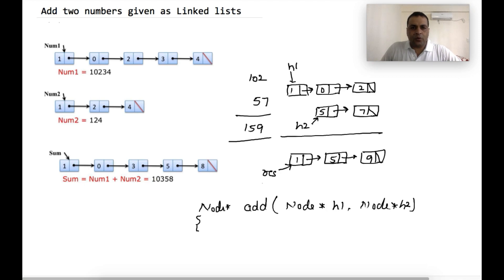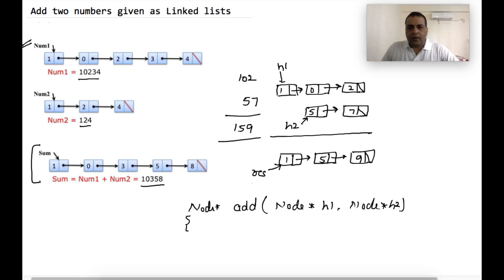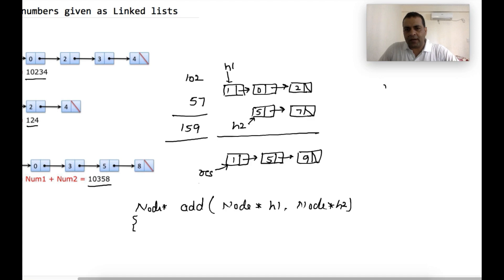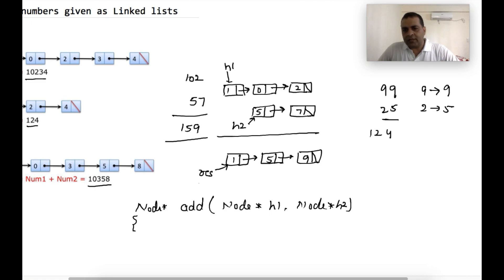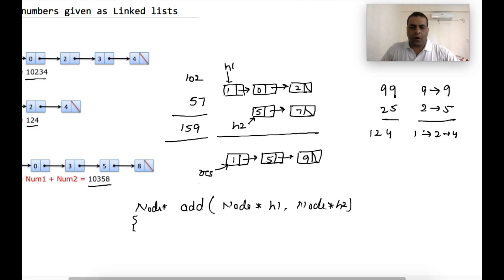If the first number is 10234 and the second number is 124, then the result should be 10234 plus 124, which equals 10358, given in the form of a linked list. You should also handle carry overflow. For example, if the two numbers are 99 and 25, the result is 124. So it is possible that the final linked list has more nodes than the input linked lists.